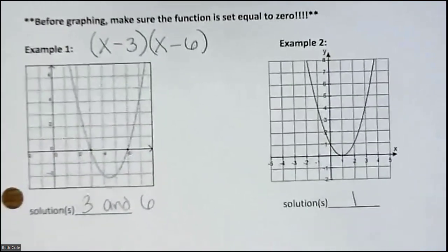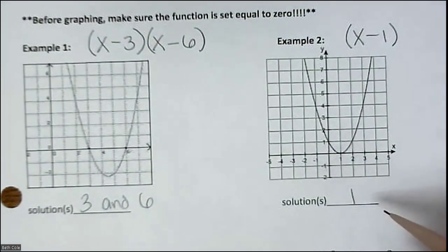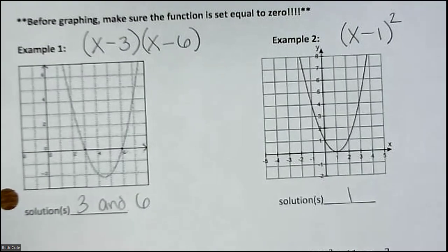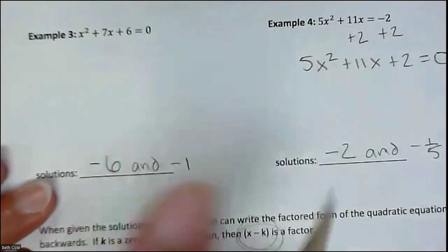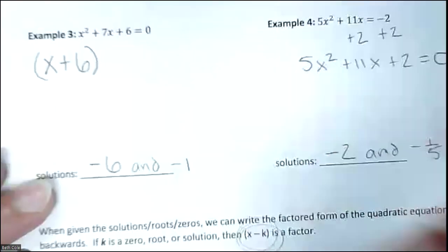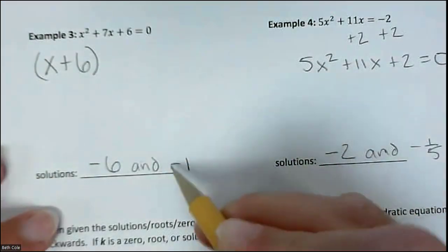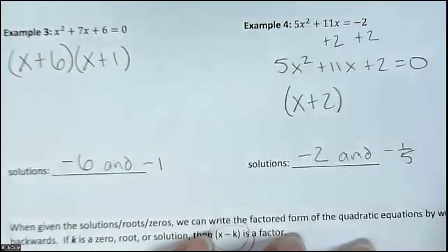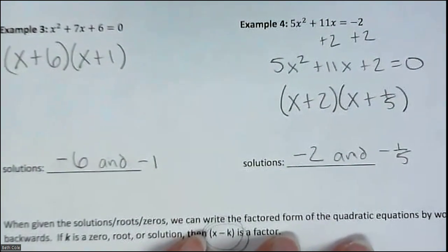The whole point is that it equals 0. When there's only one intercept, do you remember me calling it a twin? You have to put the squared on there. Now for negative 6, it's backwards: when you write the factor it would be x plus 6, because negative 6 plus 6 is 0. So what's the other one? x plus 1. For negative 2, it would be x plus 2, and then x plus 1 fifth. Do you see how it's the opposite?